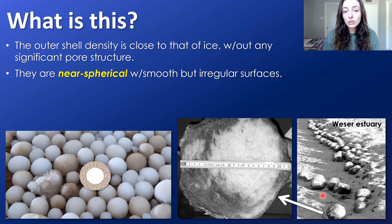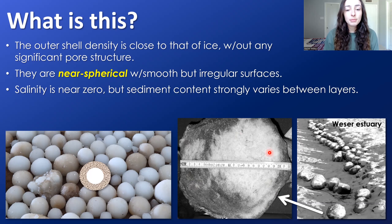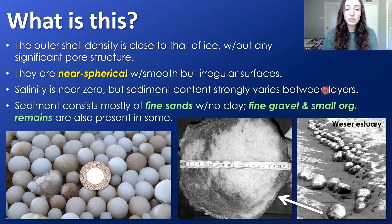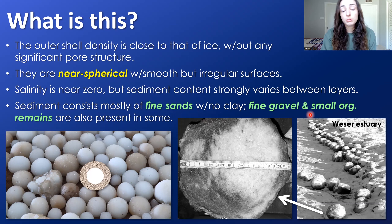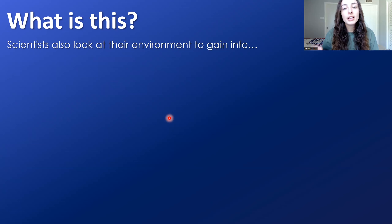The balls are near-spherical with smooth but irregular surfaces. Their salinity content is near zero throughout the entire interior and exterior. However, the sediment content strongly varies depending on the layer. The outer layer consists mostly of fine sand with no clay content, but fine gravel and some small organic remains can also be present. The scientists also look at the environment, which obviously induced their formation somehow.